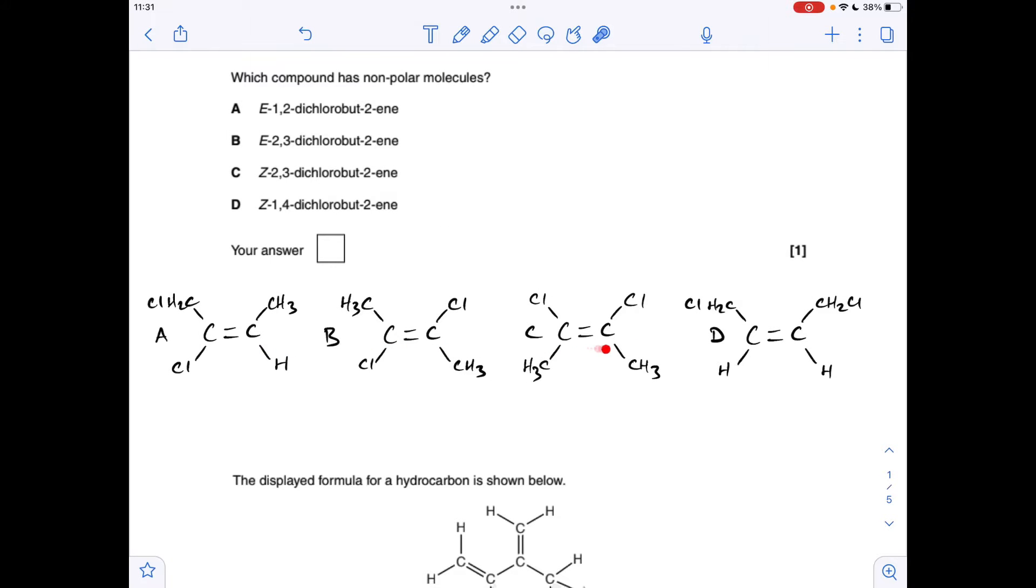You'll notice I've drawn up all four of these molecules. We've got to identify the non-polar one, so we're basically looking for a symmetrical molecule. I'll quickly talk through each one to explain how the name fits the structure. So A, it's the E form of 1,2-dichlorobutene. You can see the chlorines are on carbons 1 and 2. The E means that the priority groups are on opposite sides of the carbon-carbon double bond, so the priority group here on this carbon is the chlorine, but on this one it's the CH3 group. You can see they're on diagonally opposite sides, so this is the E form.